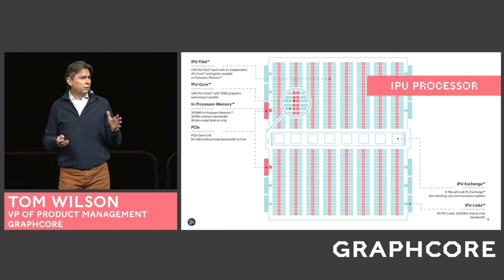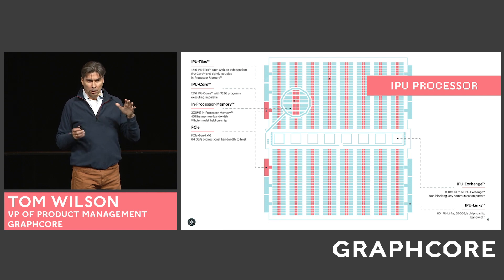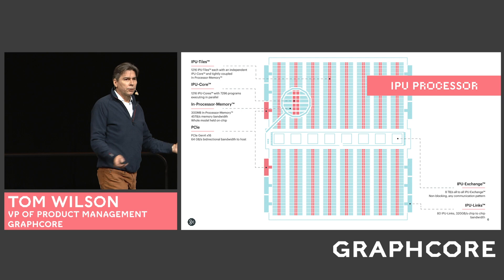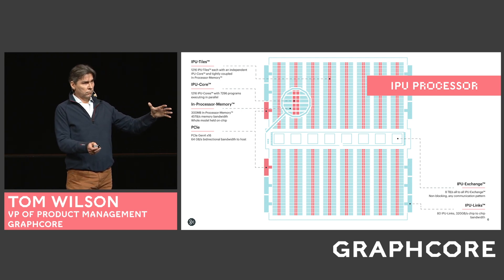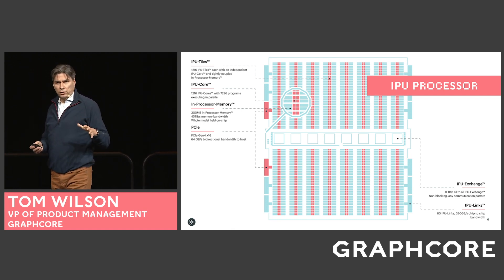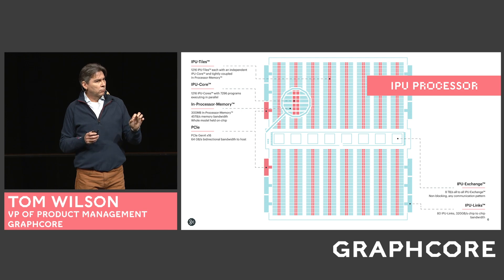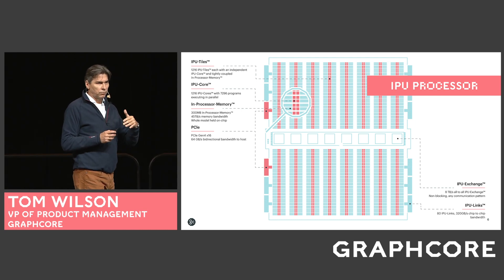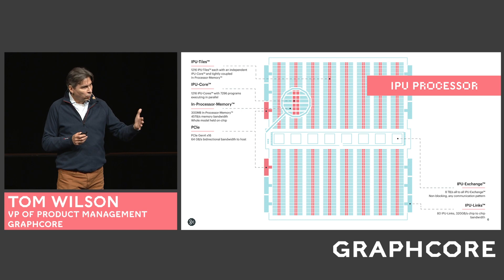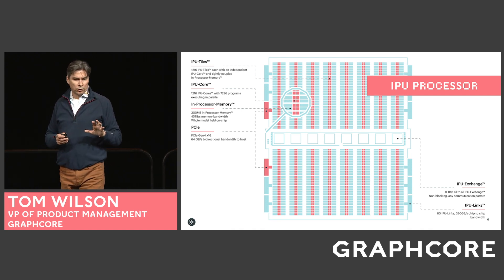That's about 45 terabytes per second of high bandwidth, low latency, energy-efficient memory available on the processor itself. This allows you to fit entire models onto the processor — no going back and forth to off-chip memory or HBM. Everything's held right on-chip. There's lots of SRAM to hold models and allow for more sparse implementations — a more flexible memory access model for accessing sparse data, perhaps smaller kernels, or kernels that have gone through depth-wise separable convolution or group-wise approaches.